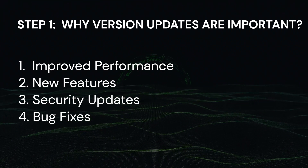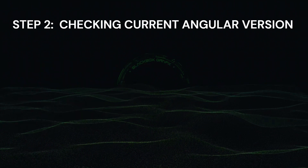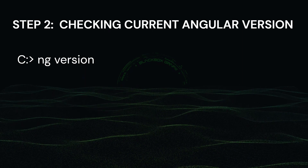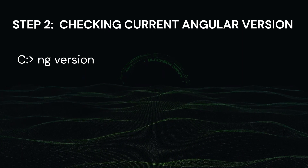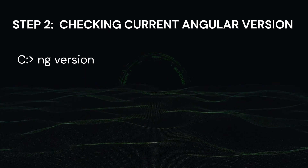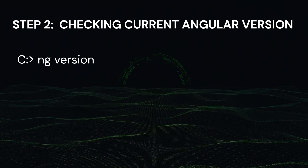The second step is checking the current version. First things first, let's check the current version of Angular in your project. For this we use the command: ng version. This command will display the Angular version you are currently using. Make a note of it before proceeding.